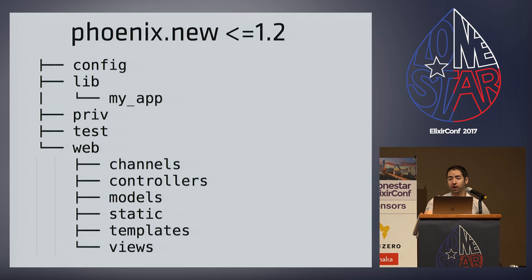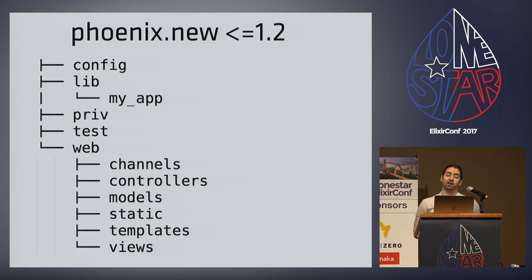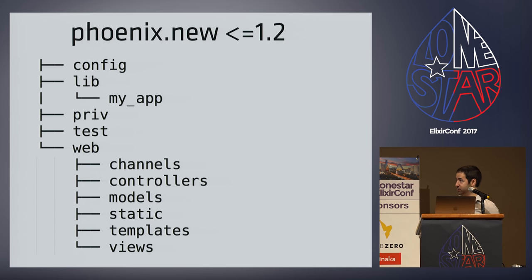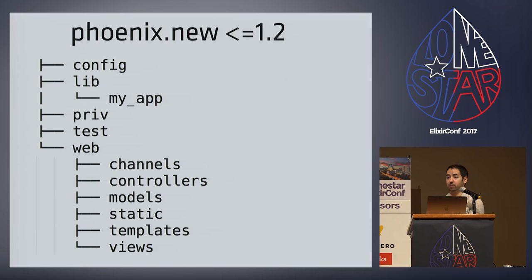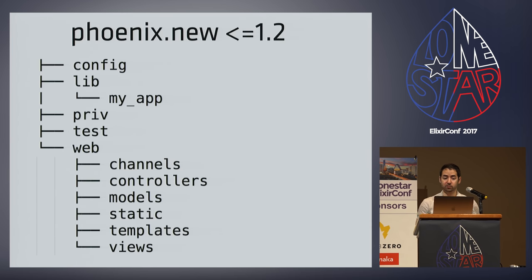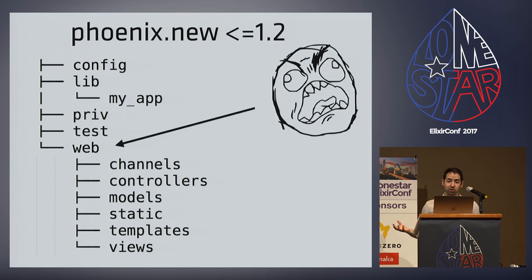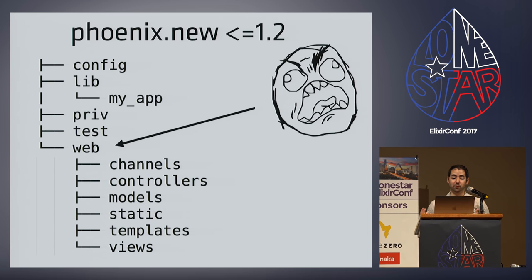With Phoenix 1.2, we had a directory structure that Jose and I thought was a great idea, because we wanted to send the message that this is an Elixir application — when you run mix Phoenix new, you get an Elixir app, not a Phoenix app. We created this root level web folder to send the message that the web part of your application isn't the domain of your application. But people saw this and said you're a framework prescribing how I should run my application — this ended up being backlash, people thinking we were trying to take over your application.